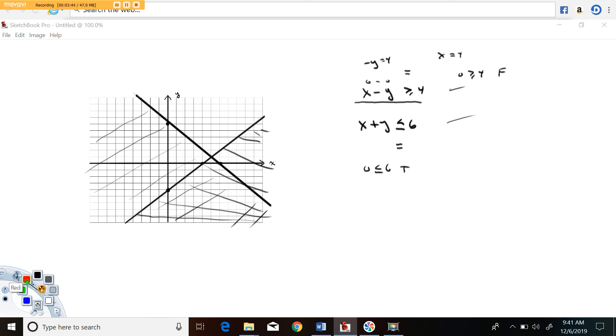So the region where both of them are shaded is this stuff. So that's the solution region for this pair of inequalities. Any point that's in here somewhere like this one right here 3 and minus 2 that should solve both of these.